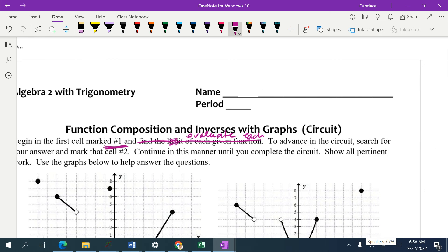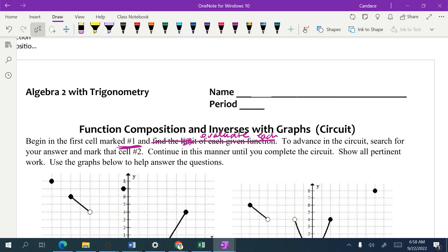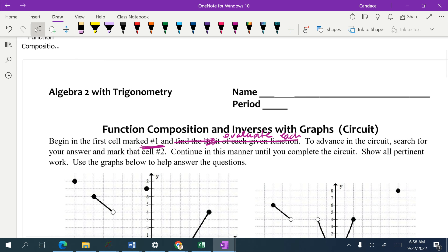To advance the circuit, search for your answer and mark that cell number two. Continue in this manner until you complete the circuit. Show all pertinent work. Use the graphs to help you answer your questions.